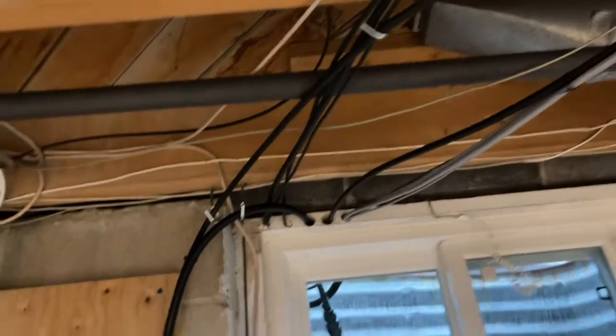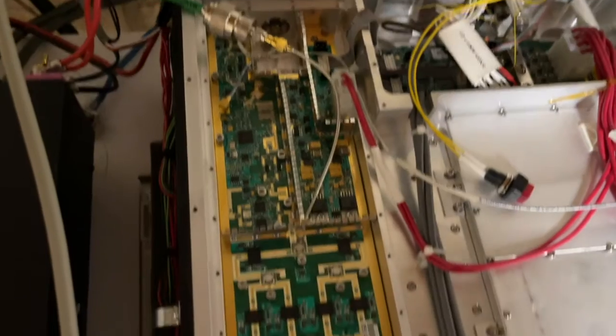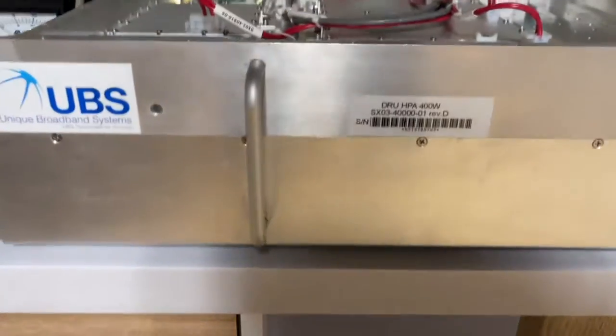The transmit coax from the transverter comes down through a 10 dB pad at the 1-watt level and it's fed into the solid-state power amplifier made by Unique Broadband Systems.